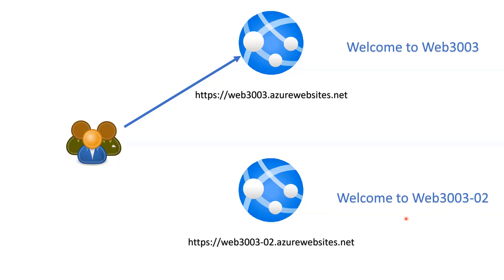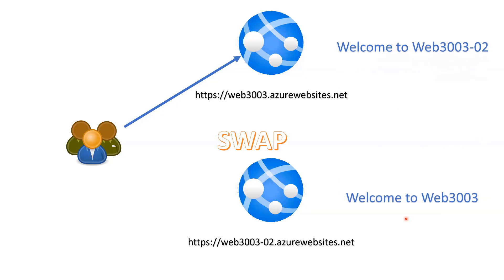How do we ensure all users start accessing the new content? One option is to tell all users to go to the new URL, but that is not feasible. Take the example of Facebook — every time they upload new content, if they keep changing their URL and informing customers to access a new URL instead of the old one, it's simply not practical. So what we can do is use the simple option of swapping the deployment slots.